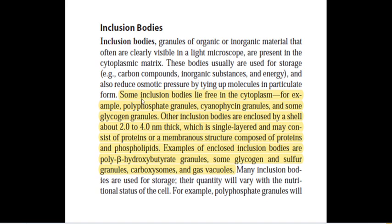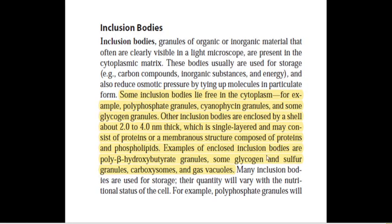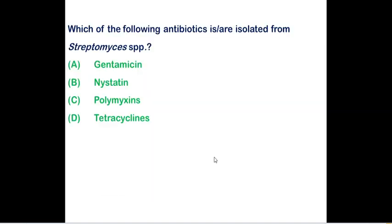Which of the following are non-membrane-bound inclusion bodies? This is also a multiple-select question. Some inclusion bodies lie free in the cytoplasm without any membrane — these include polyphosphate granules, cyanophycin granules, and glycogen granules. The correct answers are option B (cyanophycin granule) and option D (polyphosphate granule). Carboxysomes and poly-beta-hydroxybutyrate granules are enclosed inclusion bodies with a shell around them.